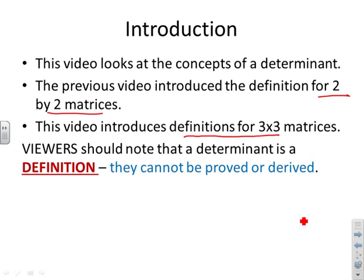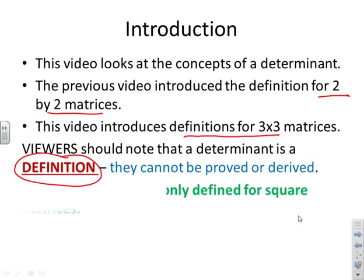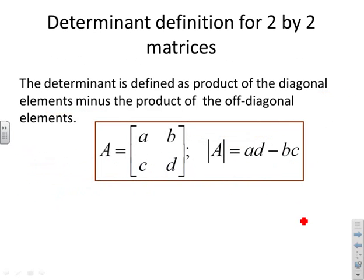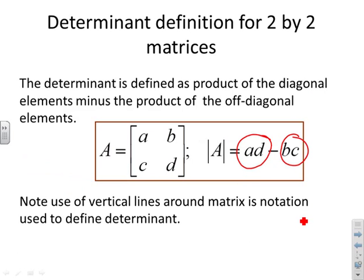Viewers are reminded that a determinant is a definition — it's not something to understand, it's just something you have to learn. You're also reminded that a determinant is only defined for square matrices. In the previous video, we said if you have a 2x2 matrix, then the determinant is given by the product of the diagonals minus the product of the off-diagonals. We introduced the notation of vertical lines to represent the determinant.